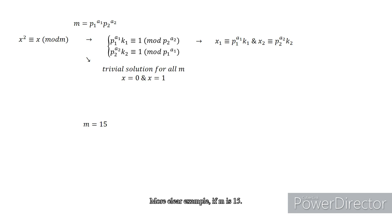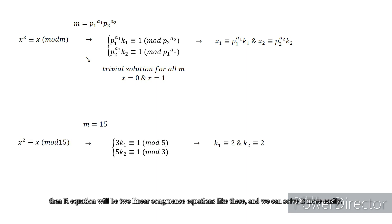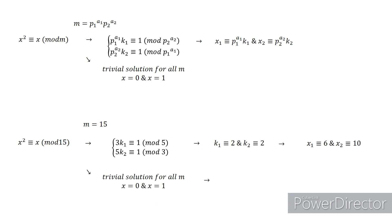More clear example: if m is 15, then our equation will be two linear congruence equations like these, and we can solve it more easily. Then solutions will be 0, 1, 6, and 10.